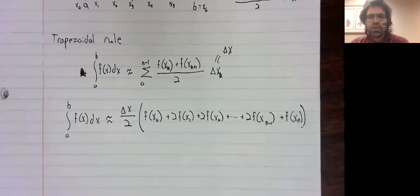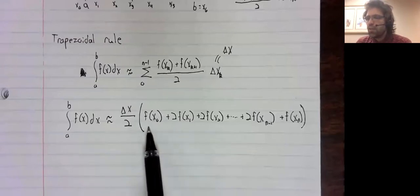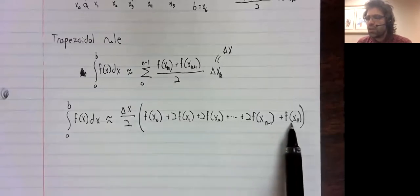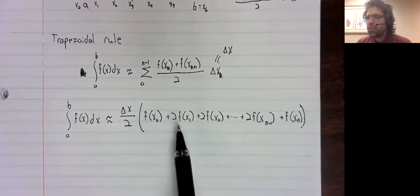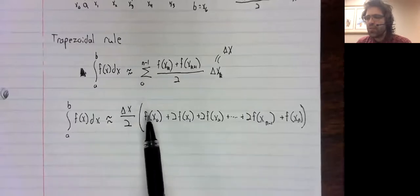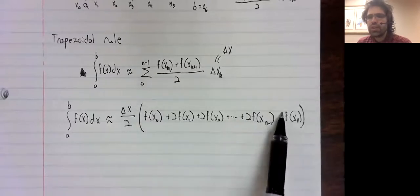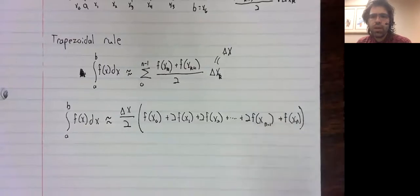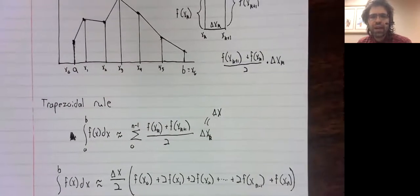In particular, the trapezoidal rule simplifies to this. All the terms in this sum have a two in front of them, except for the first and the last term. Why is that?